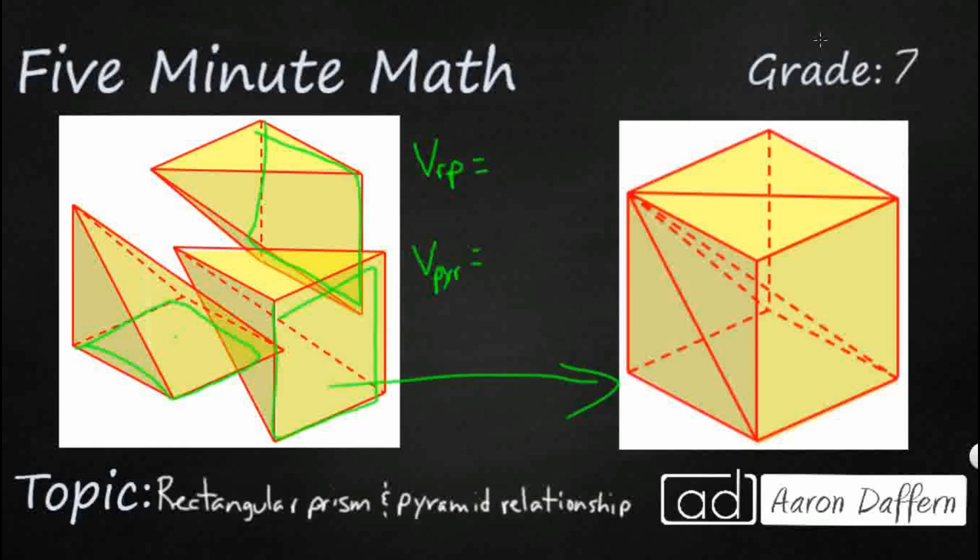And so my volume of a rectangular prism is simple. It's base times height. So knowing that it takes 3 pyramids with the same base and the same height, I can then derive that a volume of a rectangular prism is one-third of base times height.